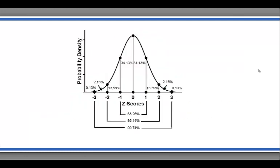Here's a normal distribution with different sections of area associated with different z-scores. Remember, a normal distribution is symmetrical. So 34.13% of the area and therefore 34.13% of the scores fall between the mean, which has a z-score of zero, and minus one, and the mean and plus one standard deviation. Together, roughly 68% of all the scores fall between plus or minus one standard deviation.